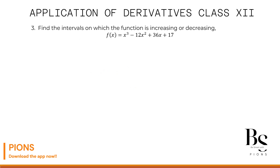Let's move to question 3. This is no longer a linear function, so we apply a different method. The steps are: first, differentiate the given function. Second, put the first derivative equal to 0. This gives you x values. Whatever values of x you get, you can decide your intervals and check if the given function is increasing or decreasing in those intervals.